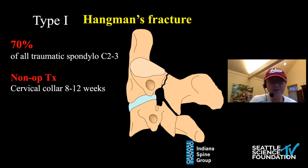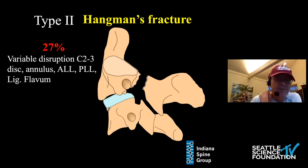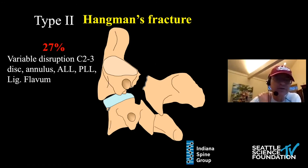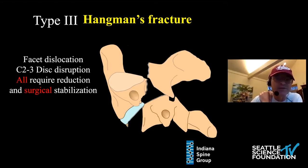The vast majority are type 1 fractures — 70% — and they are routinely treated non-operatively with a collar for two to three months. Less commonly, type 2 fractures have variable displacement of the C2-C3 disc space and are displaced more than three millimeters. These are the controversial fractures. Type 3 fractures are extremely rare, involve a facet dislocation of C2 on C3, and all require surgical stabilization.